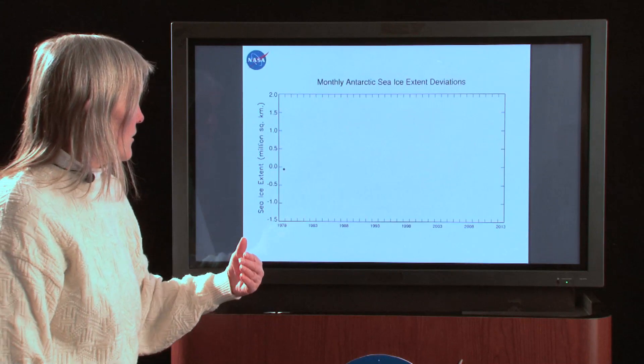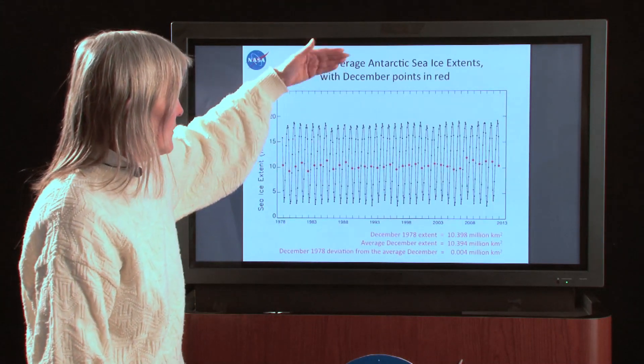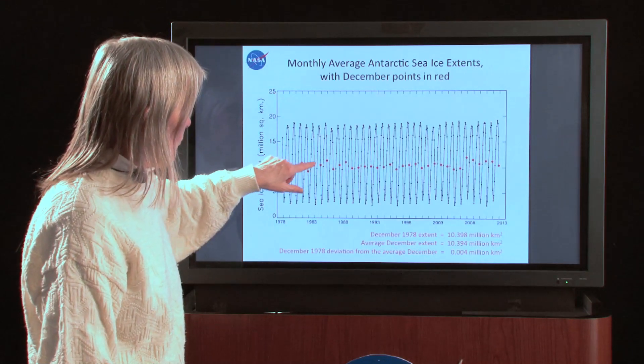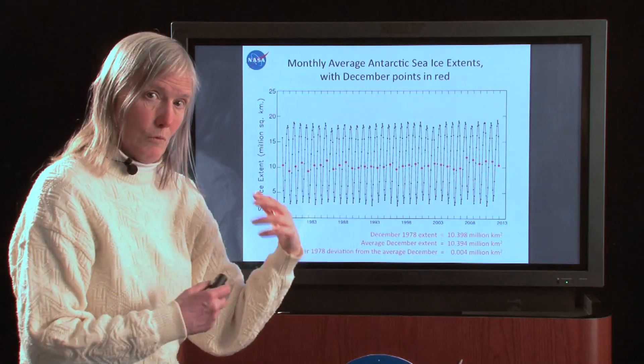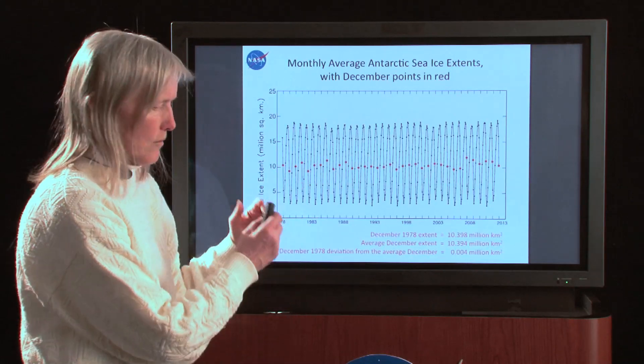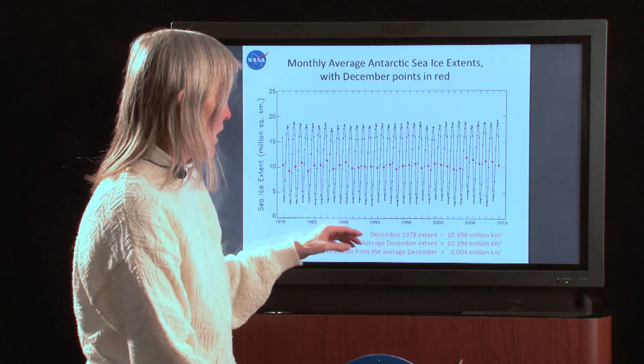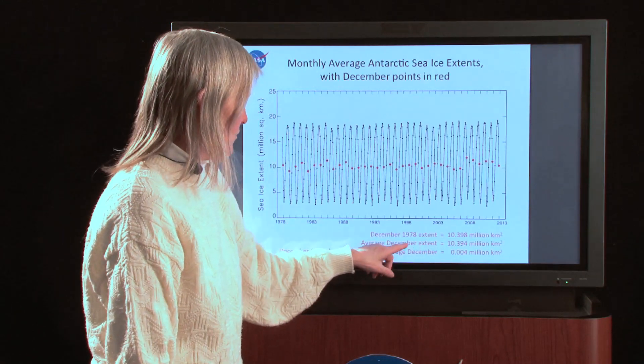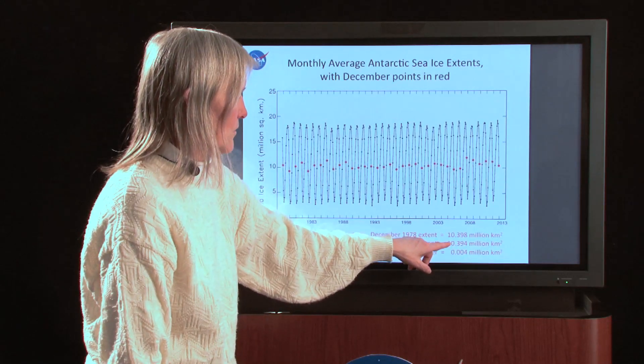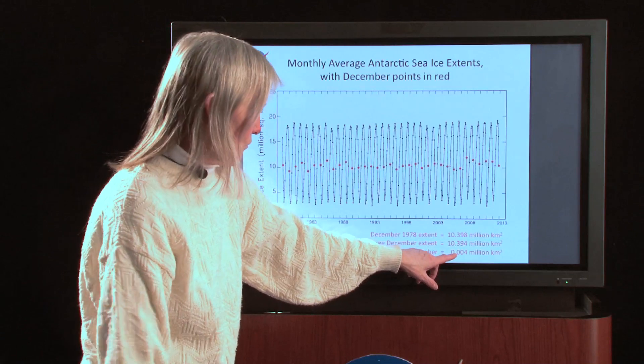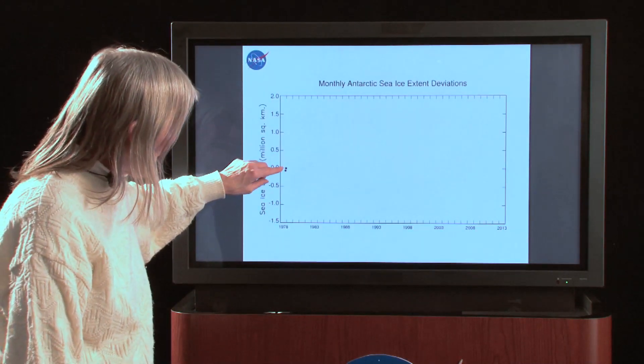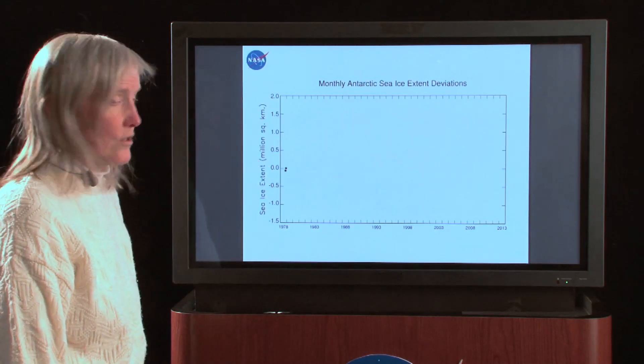We do the same thing for December, the second month on the plot, December of 1978. And now we compare it with all the other Decembers. So we're removing the seasonal cycle by comparing December only with December, comparing January only with January and on. And we end up now, when we take the December value and we subtract from it the average December value, now we get a value that's very, very close to 0.004 million square kilometers. And we go ahead and we plot that point. You can see it's very, very close to where the zero is.